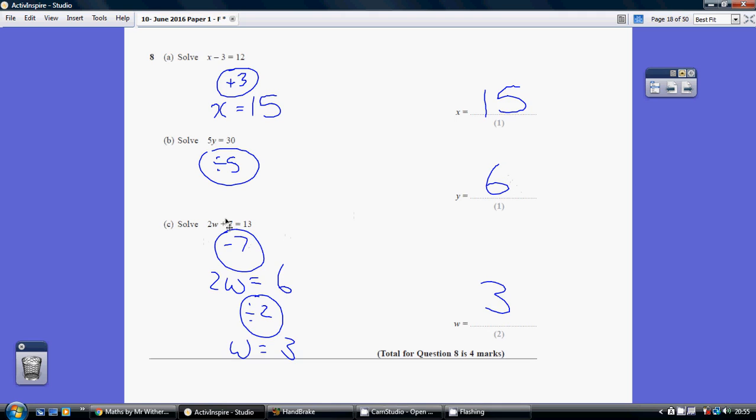And part C, how do we undo an adding of 7? We take away 7 from both sides. So we get 2W equals 13 take away 7, equals 6. 2W are 6. 2 threes are 6.